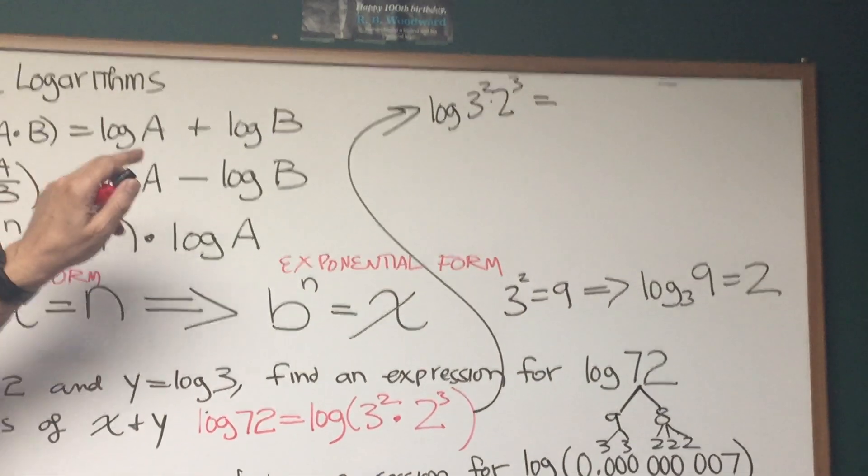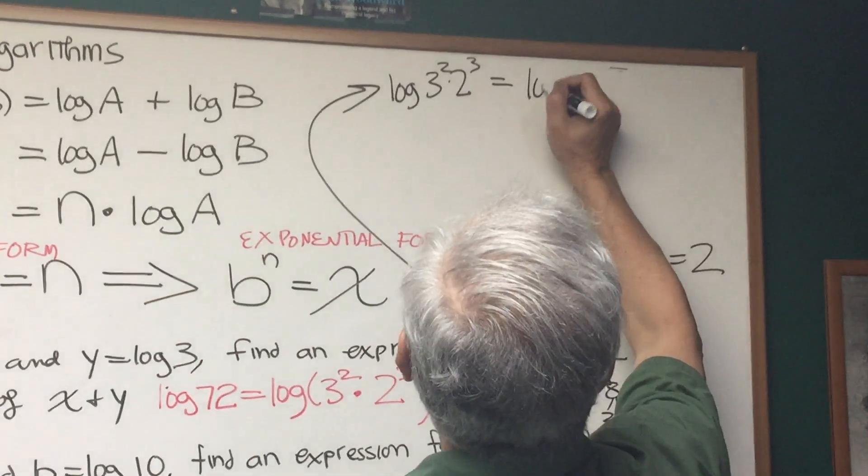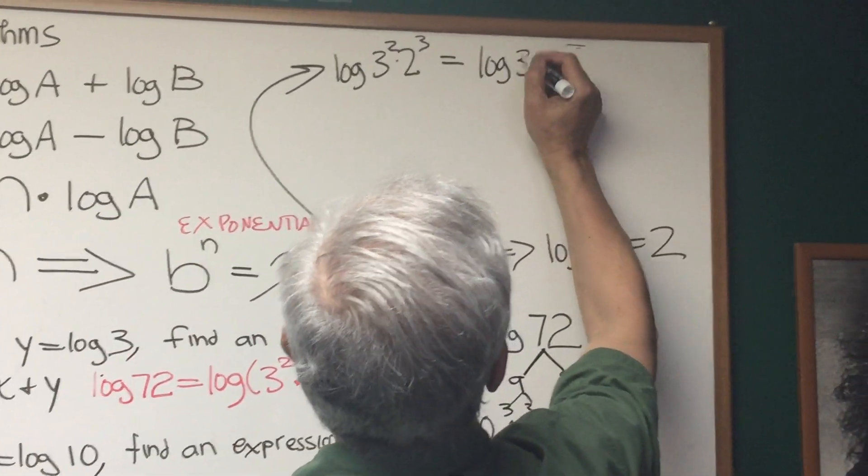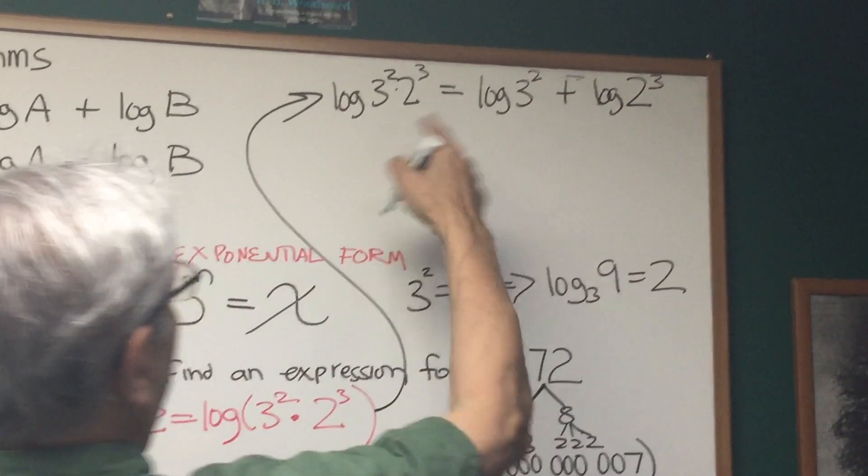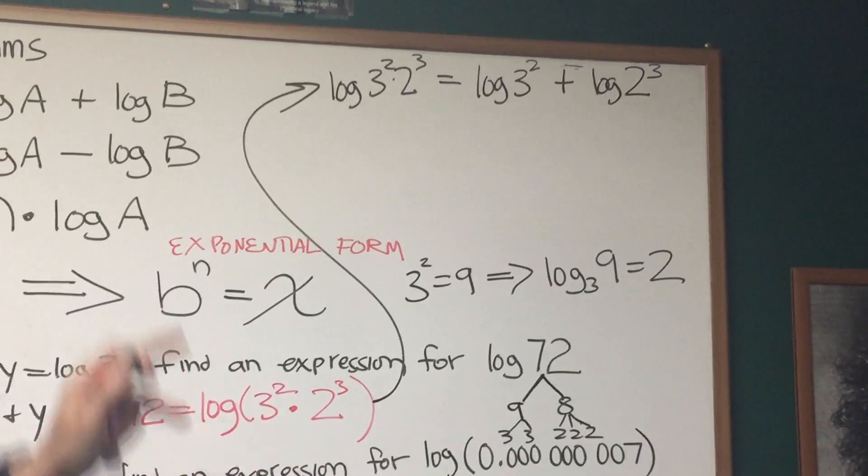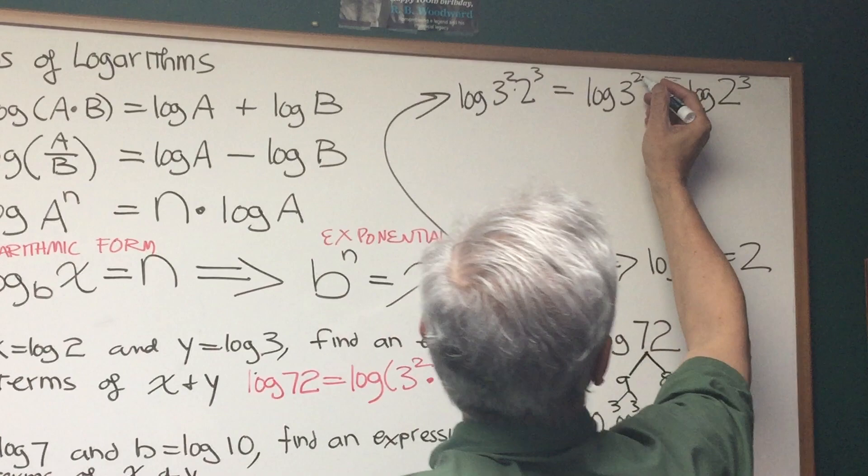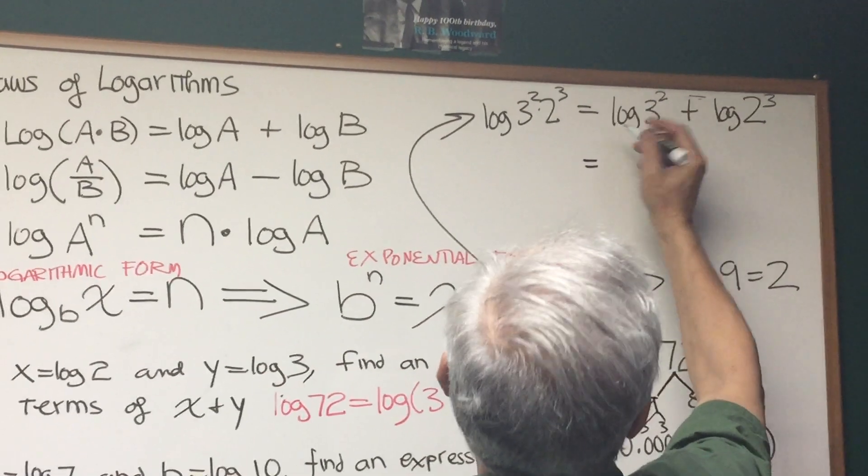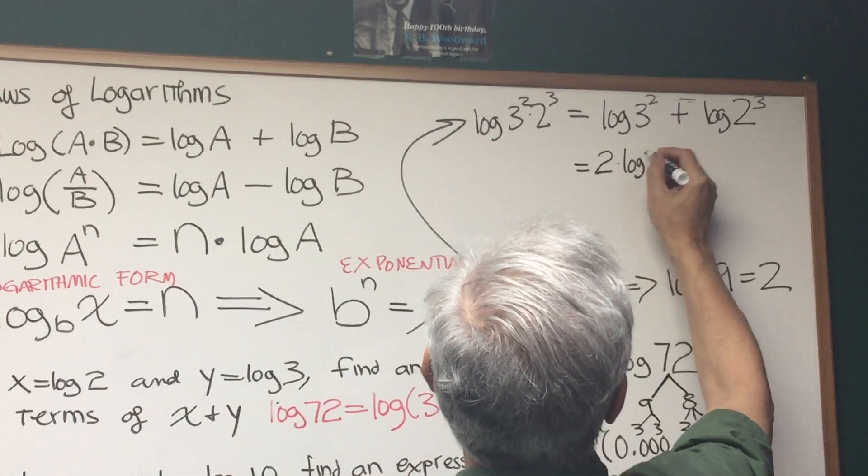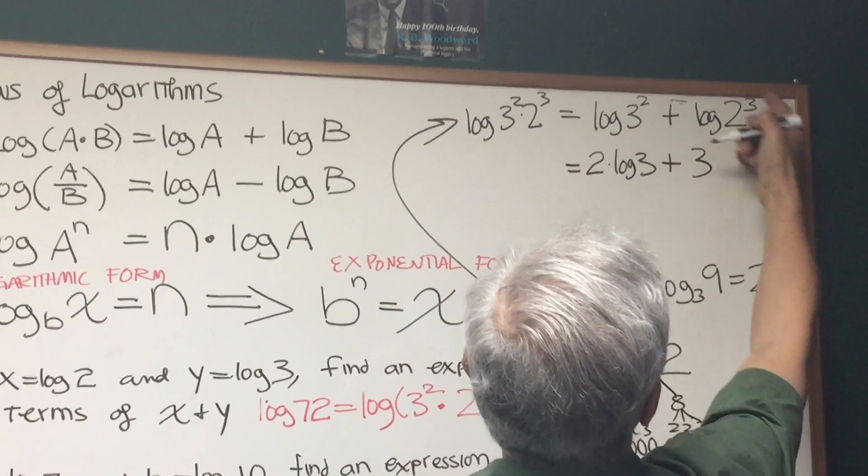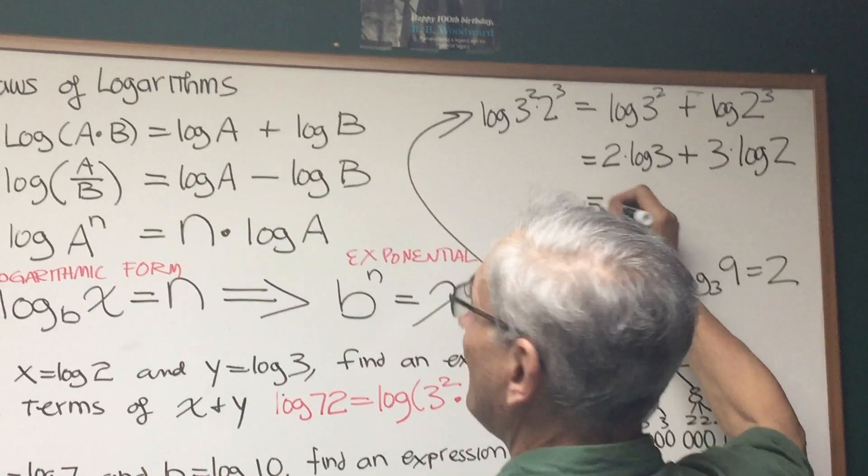So let's bring this up here, and we have log of 3 squared times 2 cubed. Let's use the first law of logs. The log of a times b is the sum of the two logs. So this is going to be log of 3 squared plus log of 2 cubed. The product is then turned into a sum. Now we're going to use the exponential law of logarithms by bringing these exponents down as coefficients. Log of 3 squared is equal to 2 times the log of 3. And log of 2 cubed, I bring the 3 down as a coefficient, is 3 times the log of 2.